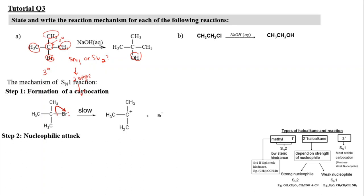Bromine has six lone pairs of electrons, and when two electrons are further added, it has eight electrons total. The formal charge of bromine is calculated from its valence electrons — bromine is in group 17, so it has seven valence electrons minus eight lone pair electrons, giving it a negative charge. For carbon, the formal charge is four valence electrons minus three bonding pairs, giving a positive charge of +1.